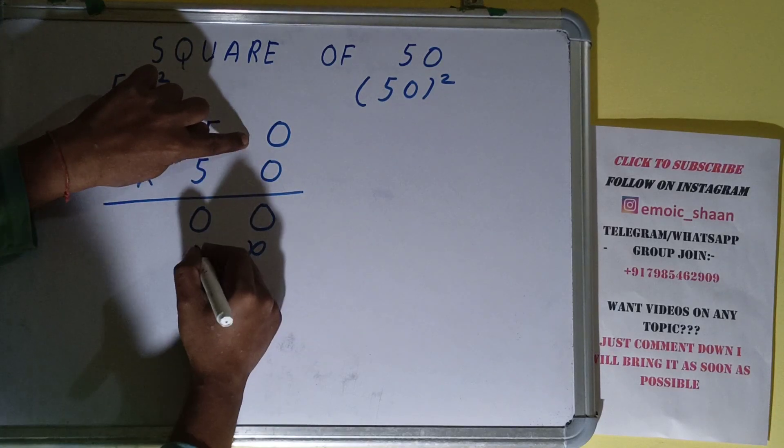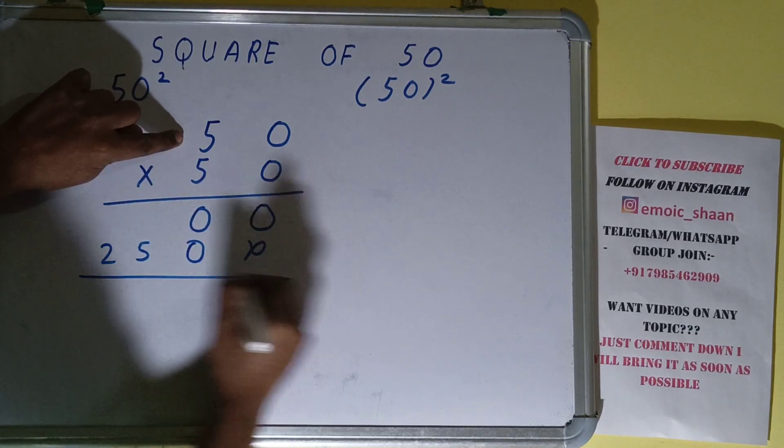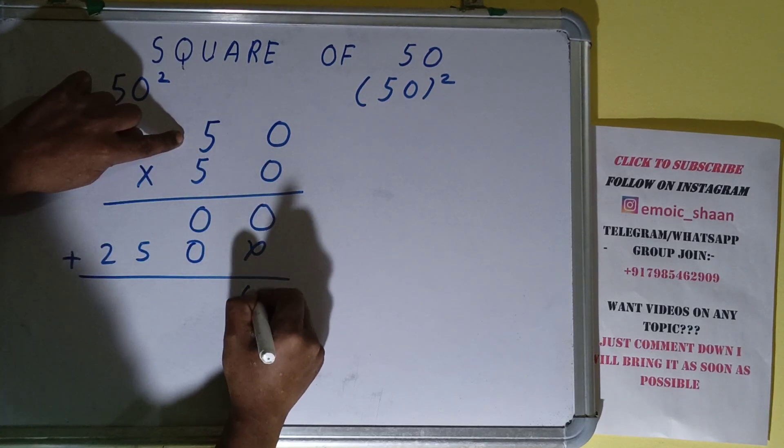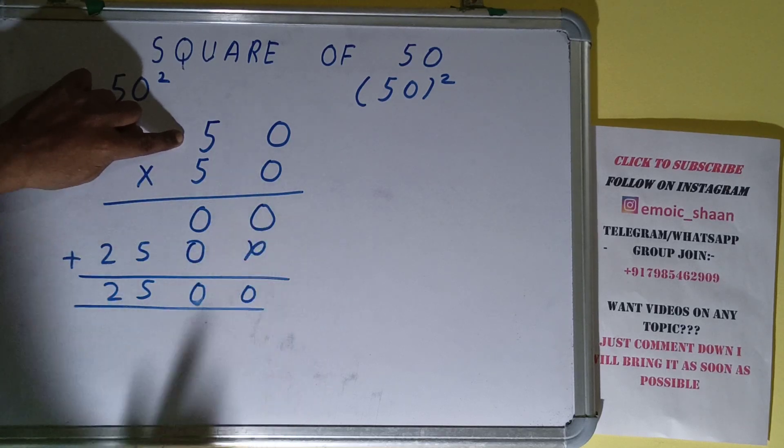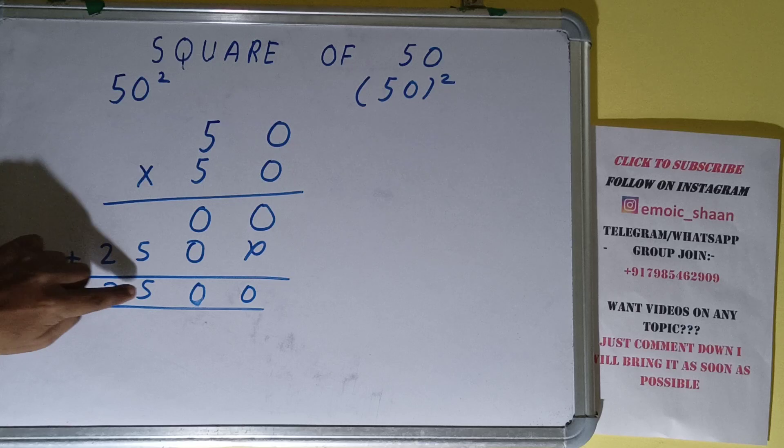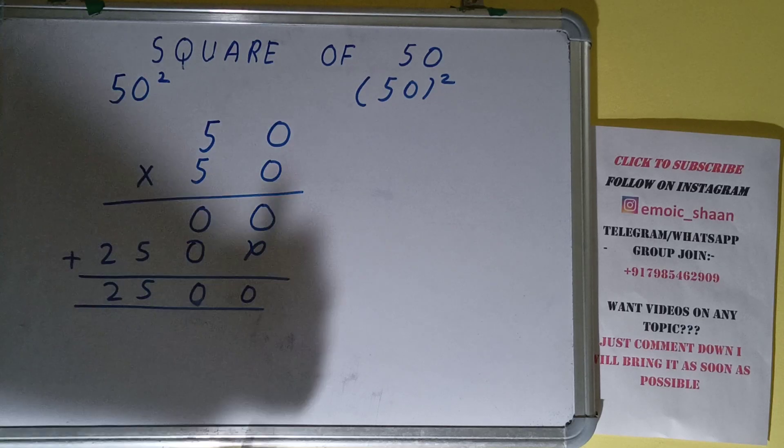Just add them all. This will be 0, this will be 0, this will be 5, this will be 2. The answer will be 2500. So we can say that the square of 50 is 2500.